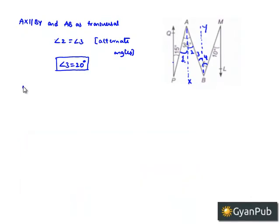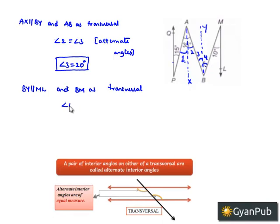Let us consider BY is parallel to ML with BM as transversal. Here, angle 10 degrees and angle 4 are alternate interior angles above transversal MB. Therefore, they will be equal, and we can say that angle 4 is equal to 10 degrees.